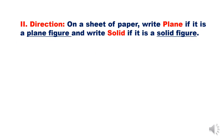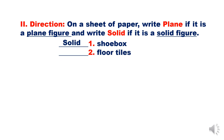On a sheet of paper, write 'plane' if it is a plane figure and 'solid' if it is a solid figure. Number one: shoe box — a shoe box is a solid. Number two: floor tiles — floor tiles are plane figures. Number three: ball — a ball is a solid.